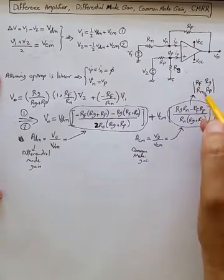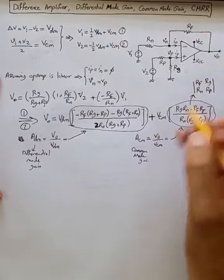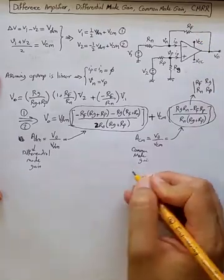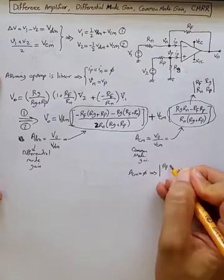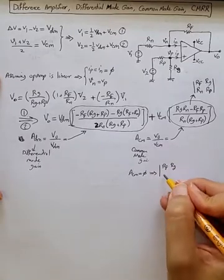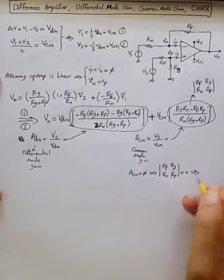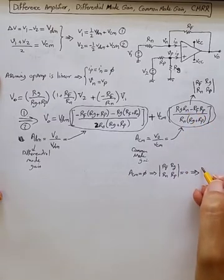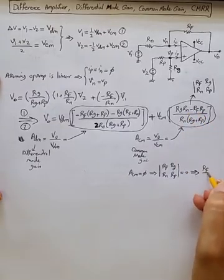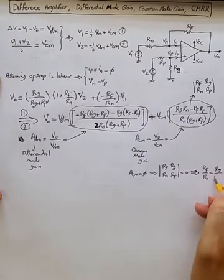To get to that point, we need to have a balanced design, meaning that to have ACM zero, we get to the point that the determinant of Rf, Rg, Rn, Rp needs to be zero. From here, we know that Rf over Rn should be equal to Rg over Rp.